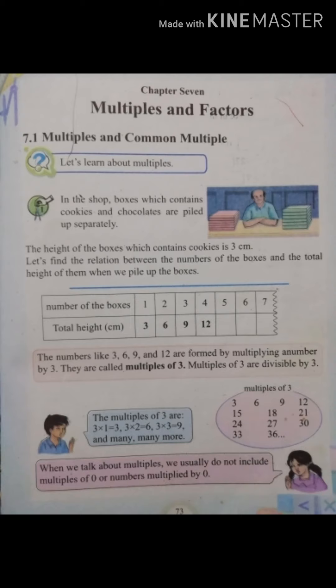We have the 3 times table: 3 times 1 is 3, 3 times 2 is 6, 3 times 3 is 9, 3 times 4 is 12.